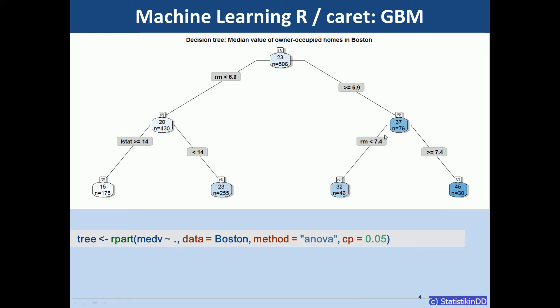And the highest numbers are to the right. The second split here is also done by rooms per dwelling. So if we have 7.4 or more then we get a median value of 45,000 on average.